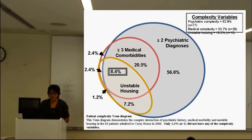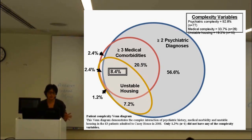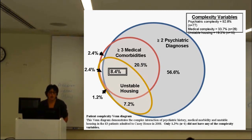We defined three complexity variables. Psychiatric complexity was defined as having two or more lifetime psychiatric diagnoses. Medical complexity is having three or more medical comorbidities, and then unstable housing. Over 90% had psychiatric complexity, a third had medical complexity, and almost 20% had unstable housing. Only one individual of all people admitted in 2008 did not have any of these complexity variables, and 8% had all three. In the last five years, substance use and mental health issues are even more prominent.